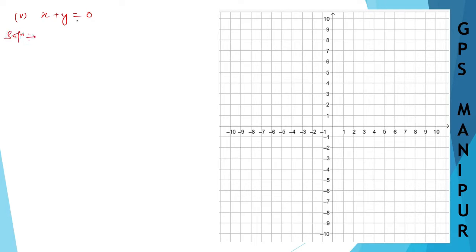x plus y equal to 0. So x is equal to — transfer y to this side. So it will be 0 minus y, which is minus y. So x is equal to minus y.